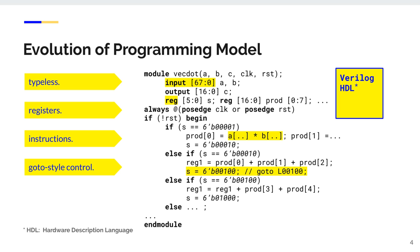Ten years ago, people had to write programs in hardware description languages such as Verilog to use FPGAs. This language is pretty much assembly — there are no types, only bits and instructions. There are no control flows, only go-to statements everywhere. These made writing FPGA programs a nightmare.